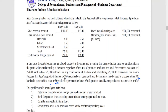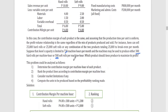Suppose that Ian's capacity is limited to 720 machine hours per month. With those 720 machine hours, the company can produce 300 hard rolls or 500 soft rolls. As you can see, more soft rolls can be produced per machine hour compared to hard rolls.